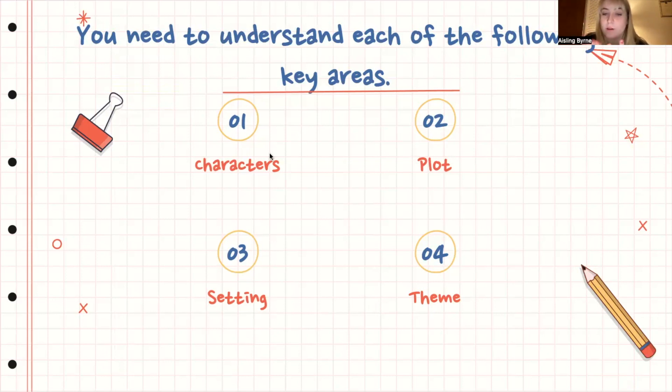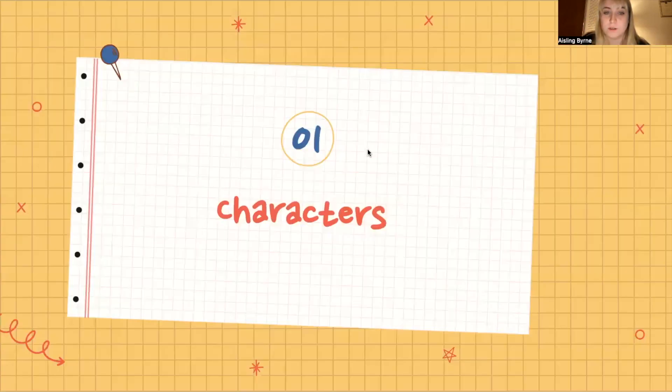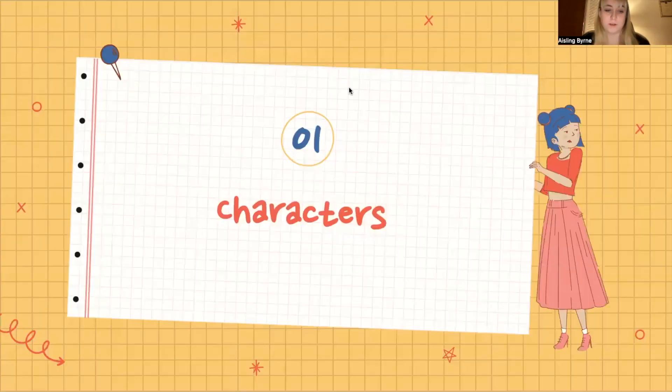Narrative styles include first person, using 'I,' and third person, which comes from a godlike viewpoint with no 'I.' You need to understand each of the four key areas of fiction: characters, plot, setting, and theme.